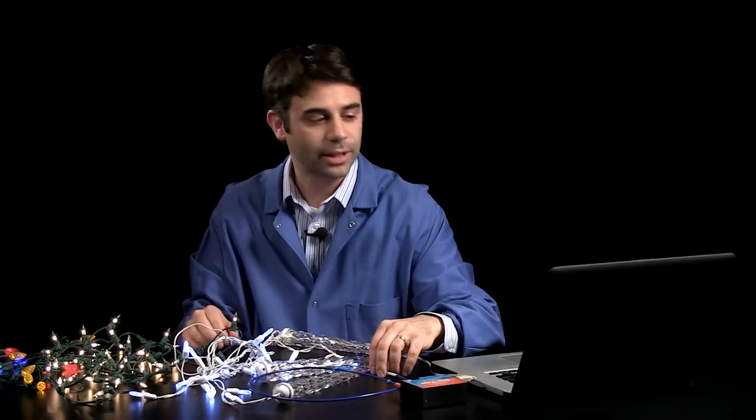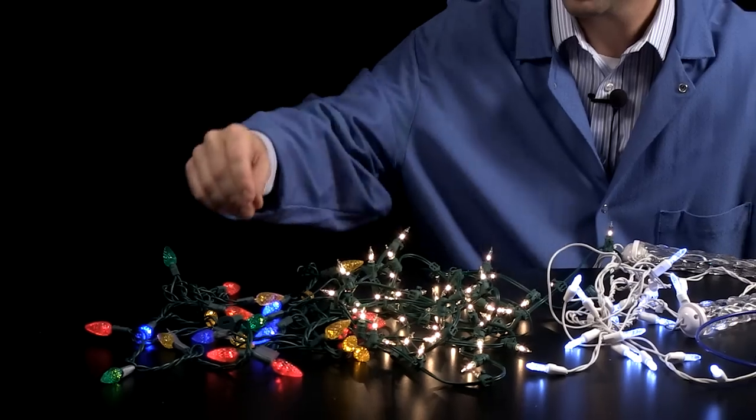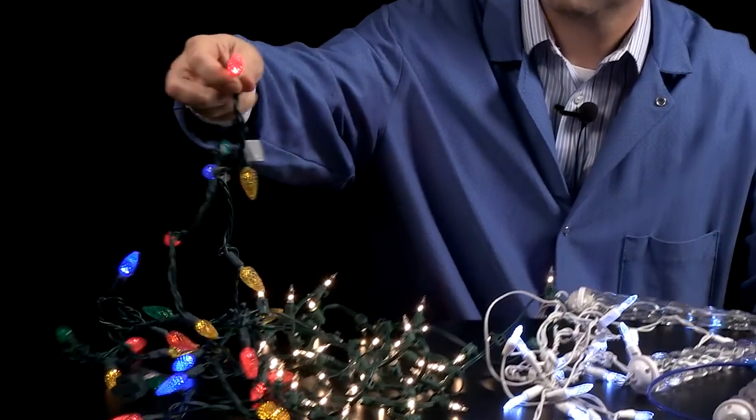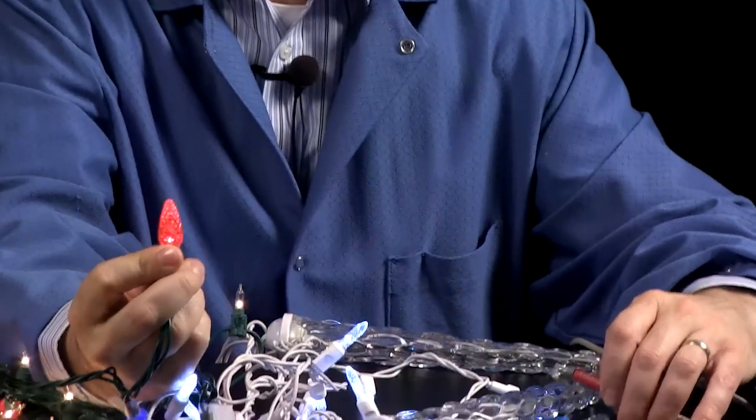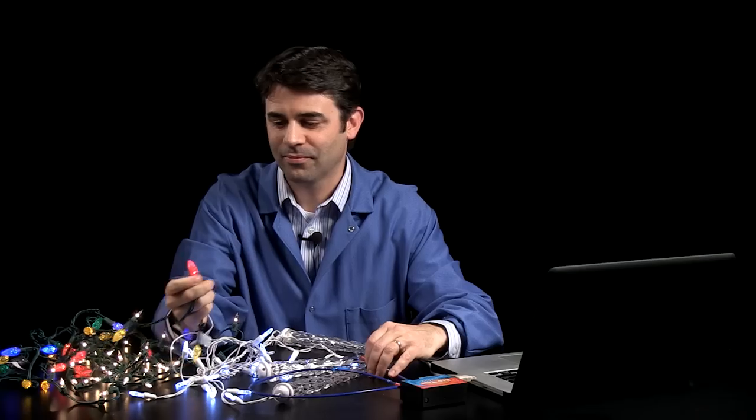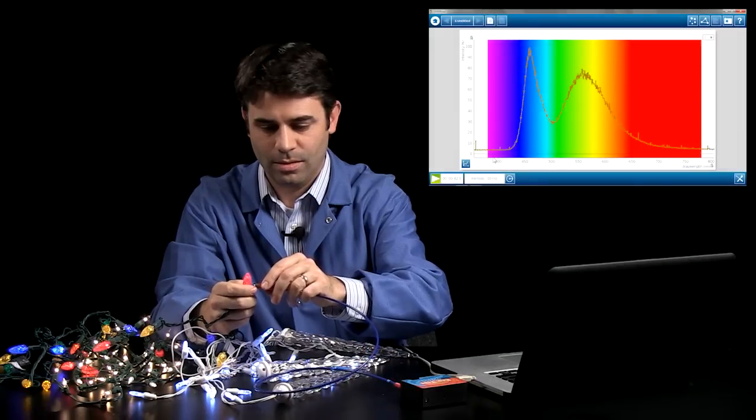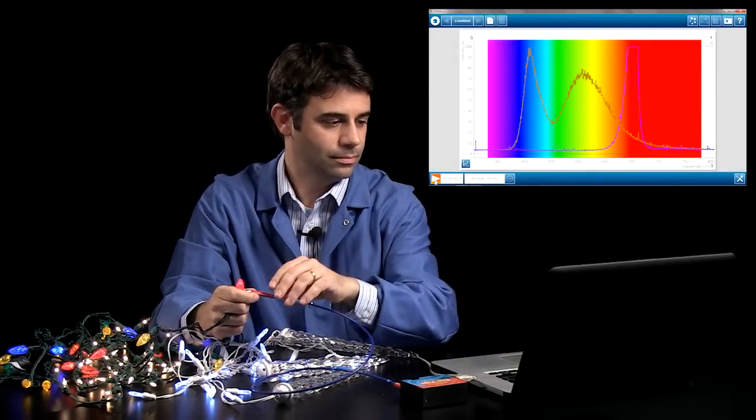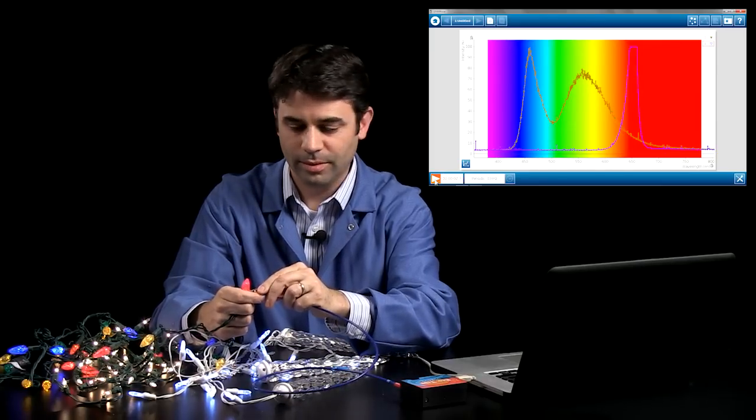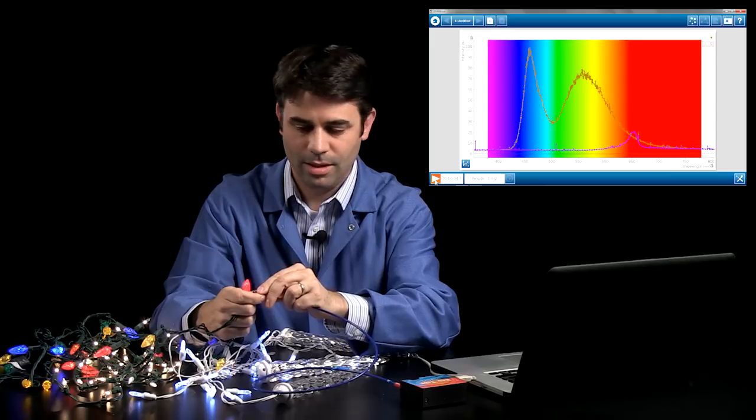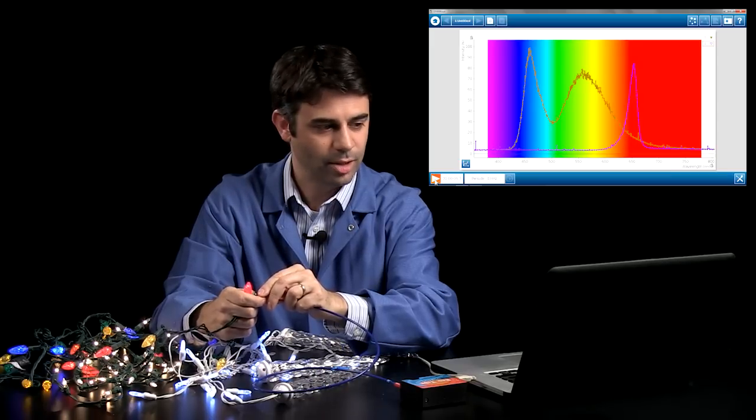We can also look at the colored LEDs. First, let's take a look at red. We'll start a new run. It's also a very bright bulb. And it is very much in the red part of the spectrum.